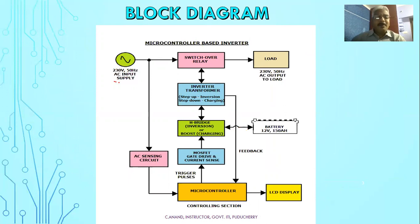This is the input AC supply. The input AC supply goes directly to the switchover relay. The AC-sensing circuit senses whether the AC supply is available or not. The sensing signals are sent to the microcontroller, which is the main controlling part.